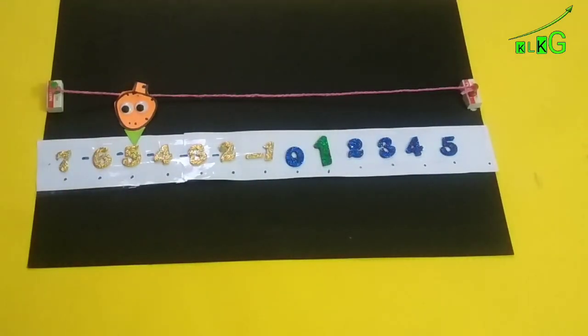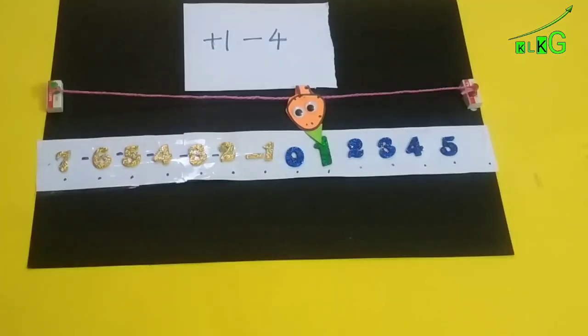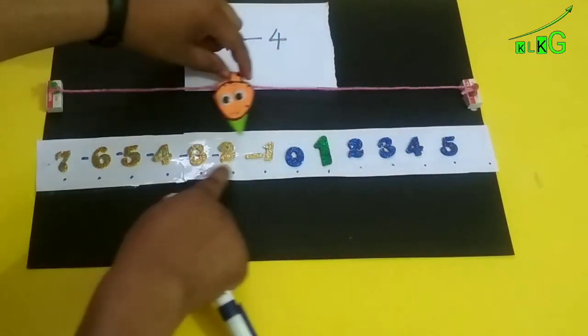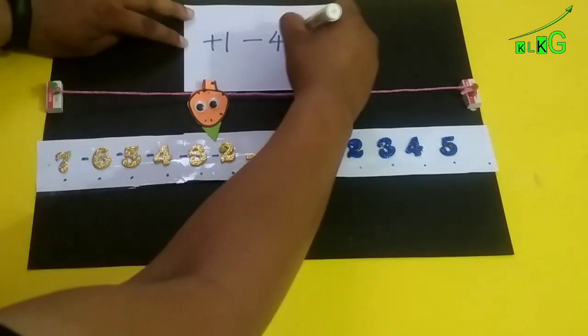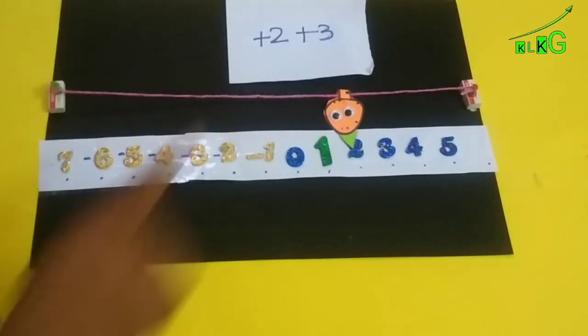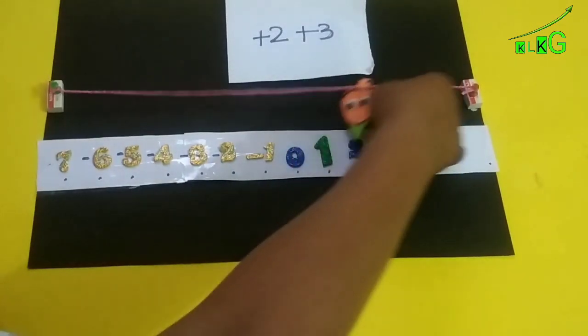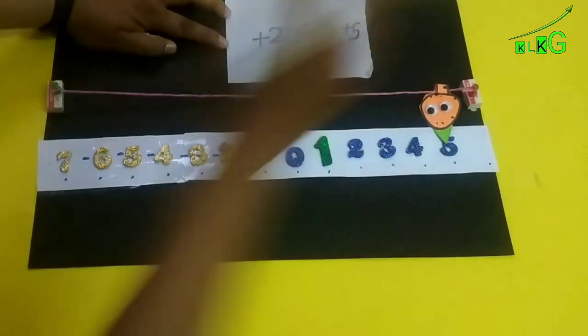Plus 1 minus 4, so plus 1, now left side four steps you have to move: 1, 2, 3, 4, so the answer is minus 3. Now plus 2 plus 3, so plus 3 steps you have to move right side, so the answer is plus 5.